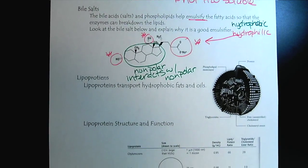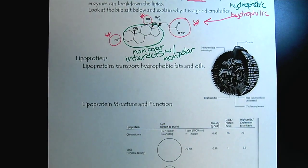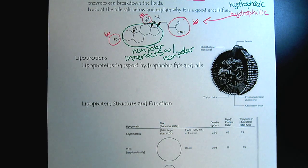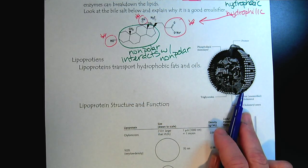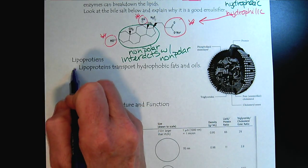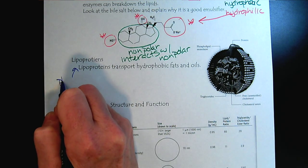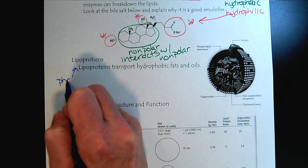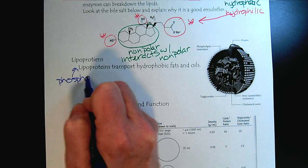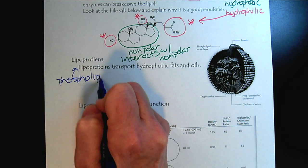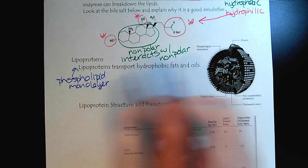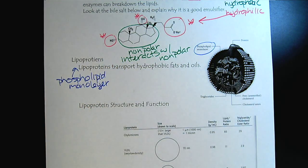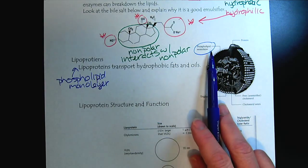Now the lipoproteins, those are the transport molecules. They're interesting because unlike our cell membrane, which was a bilayer, these are a phospholipid monolayer. And we need that. It's right there, the phospholipid monolayer.